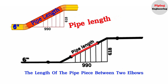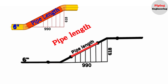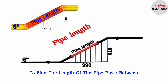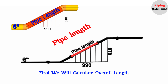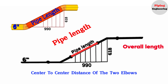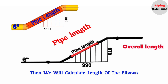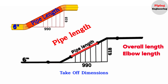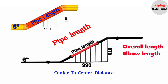We need to find the length of the pipe piece between two elbows in this pipeline. To do so, we need to follow these steps: first, calculate the overall center-to-center distance of the two elbows; then calculate the take-off dimensions of the elbows; and finally, subtract the take-off lengths of the elbows from the total center-to-center distance.